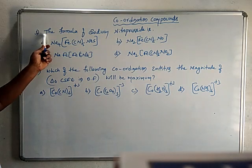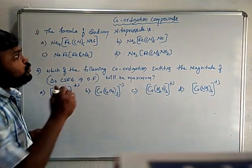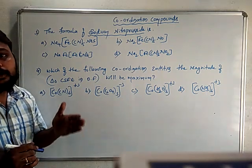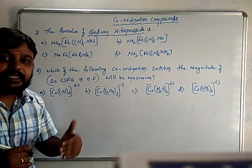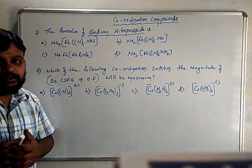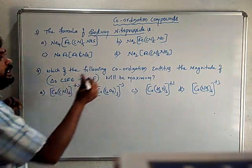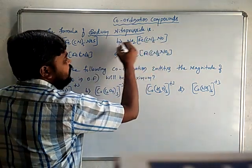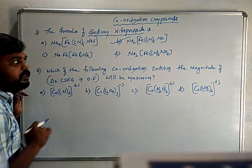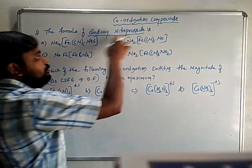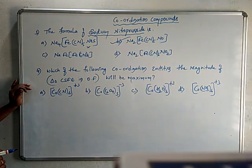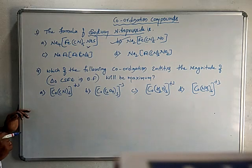The next question asks for the formula of sodium nitroprusside, a very important compound used in qualitative analysis — specifically in the Lassaigne's test to identify the presence of sulfur in organic compounds. The formula of sodium nitroprusside is Na₂[Fe(CN)₅NO]. When a sulfur-containing organic compound is treated with this compound, the NO group combines with sulfur to become NOS, giving a characteristic color.